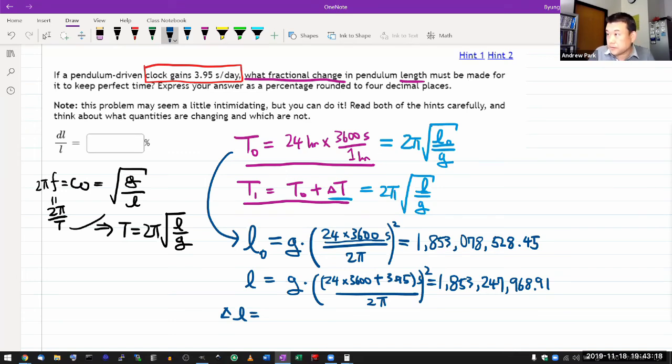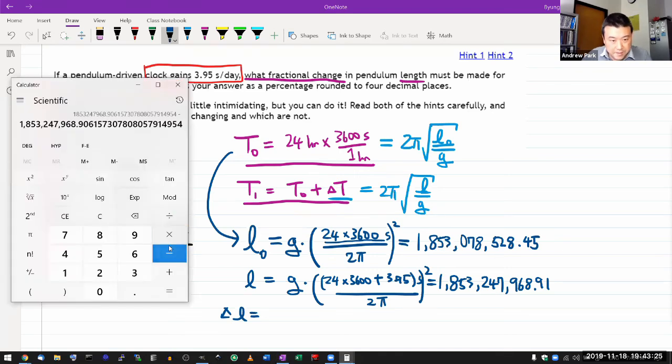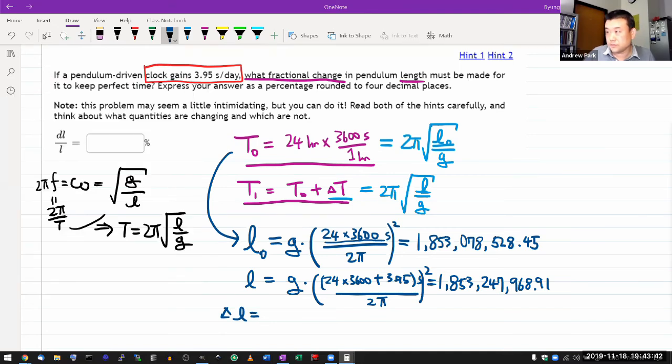So let's take the difference. I don't want to do it in my head. So let me do this here. Minus the other calculator, 1853,078,528.45 is equal to, all right. Let me move that off so that I can look together. 169,440.46. Double check.